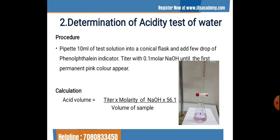Since this is an acidity test, we use a standard basic titrant. In the previous experiment on alkalinity, we used an acidic solution of known concentration to neutralize the basic compounds in water. Here, since we are determining acidity, we use a basic solution so that the neutralization of the acid present in the water is feasible. The indicator used is phenolphthalein.